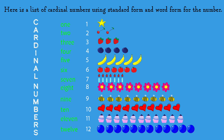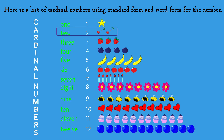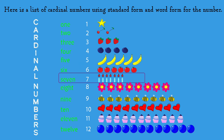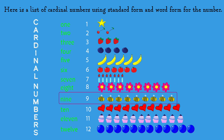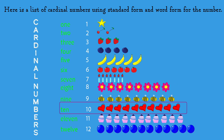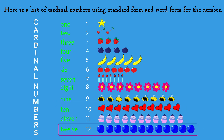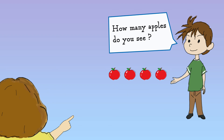Here is a list of cardinal numbers using standard form and word form for the number: 1, 2, 3, 4, 5, 6, 7, 8, 9, 10, 11, 12. How many apples do you see?